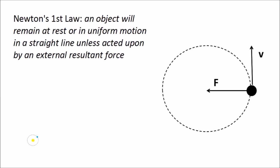Whenever an object travels in a circle we call that circular motion, but what makes an object move in a circle? Newton's first law states that an object continues to move in a straight line unless a resultant force acts upon it — uniform motion in a straight line unless acted upon by an external resultant force. So we need a resultant force to make something move in a circle. That force always acts inwards towards the center of the circle and it's called the centripetal force.